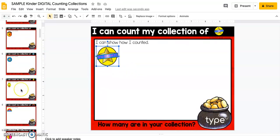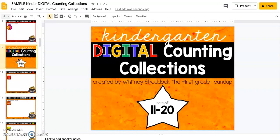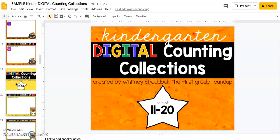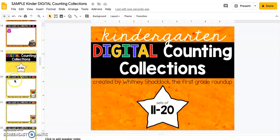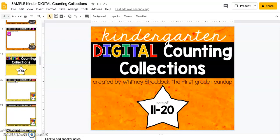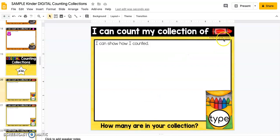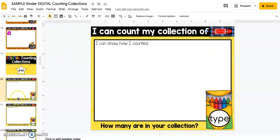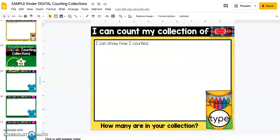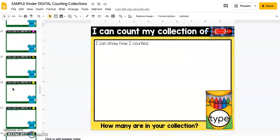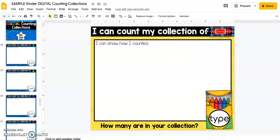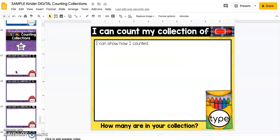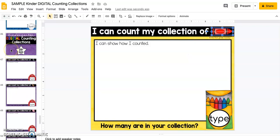So the reds go through 1 through 10, orange goes 11 through 20, yellow is 21 through 50, and then you'll notice on the yellow ones, the collection is just up here so that it gives the kids more space to count. And they're a little bit smaller just because they'll need more room to count up to 50 objects. The green mats are 51 through 100, the blue mats are 101 through 200, and then the purple mats are 201 through 500.